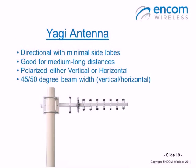The second antenna that can be used with ENCOM broadband radios is the Yagi antenna. Just like the panel antenna, the Yagi is also a directional antenna, although it is not as highly concentrated in beam width. The beam width on a Yagi antenna is about 45 and 50 degrees on the vertical and horizontal planes respectively, making it very good for medium to medium-long distances. For longer distances, the panel antenna is still the preferred choice.